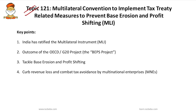Today's first topic is the Multilateral Convention to Implement Tax Treaty Related Measures to Prevent Base Erosion and Profit Shifting — in simple, we can call it the Multilateral Instrument (MLI). India ratified this instrument recently. This multilateral convention is an outcome of the OECD/G20 project, of which India is a member, to tackle base erosion and profit shifting.